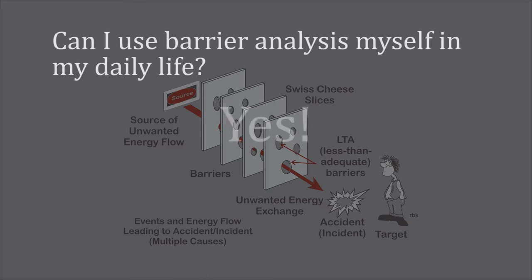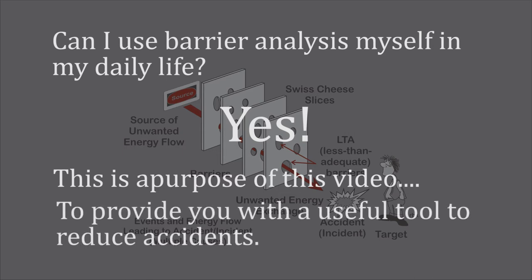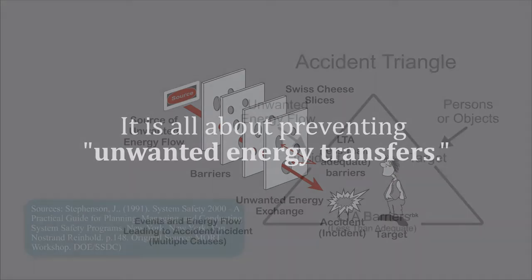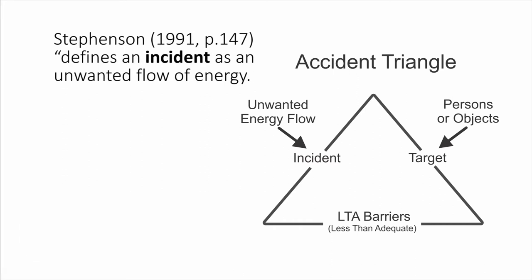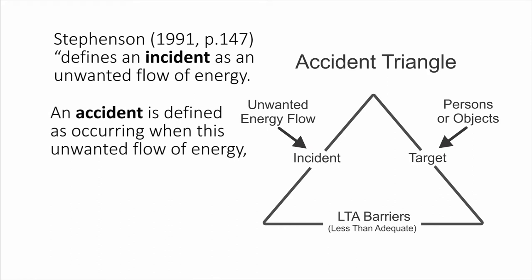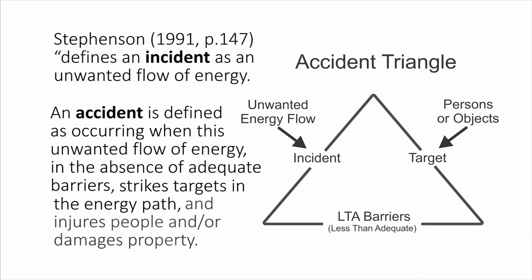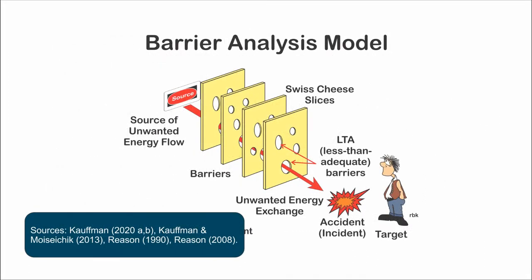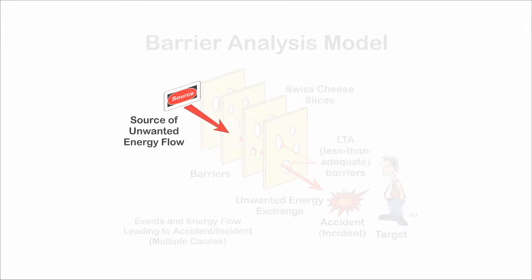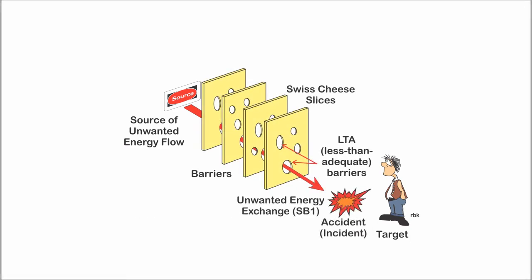It is a standalone analysis and can be used by individuals to live safer lives. Accidents can be thought of in terms of an unwanted energy transfer from a source to the target. Stevenson defines an incident as an unwanted energy flow, and an accident as occurring when this unwanted energy flow, in the absence of adequate barriers, strikes targets and injures people and/or damages property. Embodied in Stevenson's definition are the four components in barrier analysis: an unwanted energy flow, a target, less-than-adequate (LTA) barriers, and multiple causes.